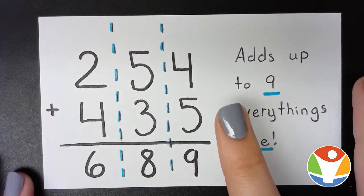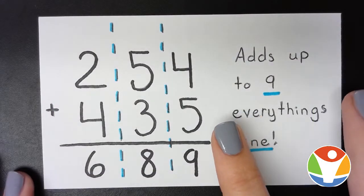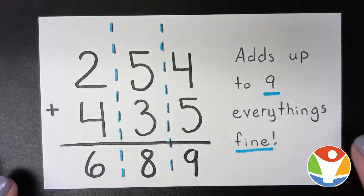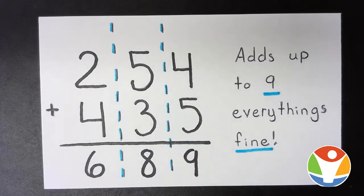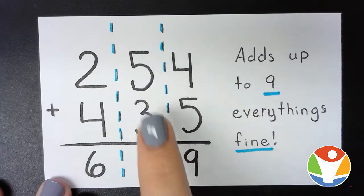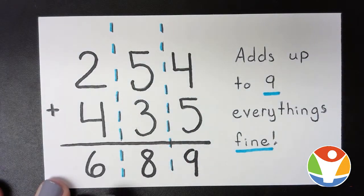First, we already know how to add a three-digit number plus a three-digit number. But if it adds up to nine, everything's fine, so we don't have to do any regrouping on this problem. We just add each place value at a time to get our answer right down here.